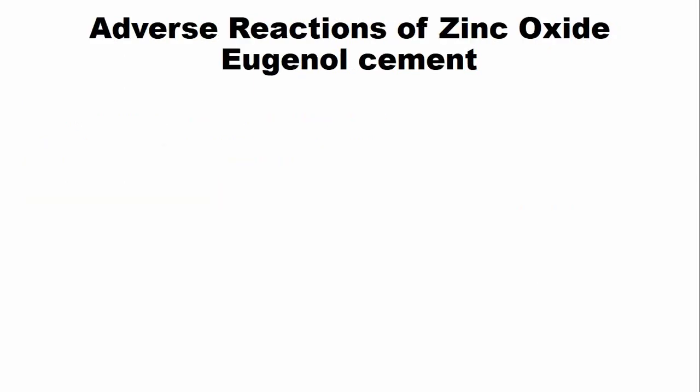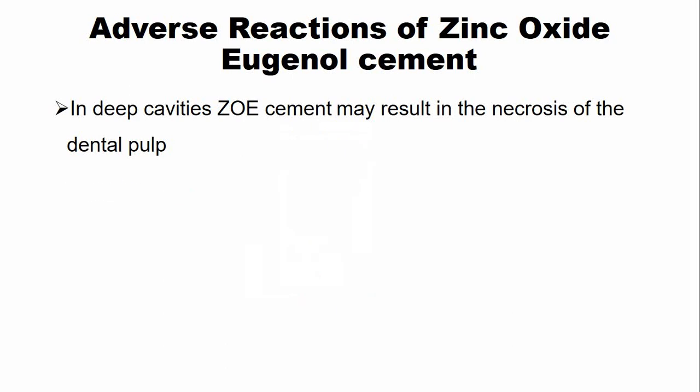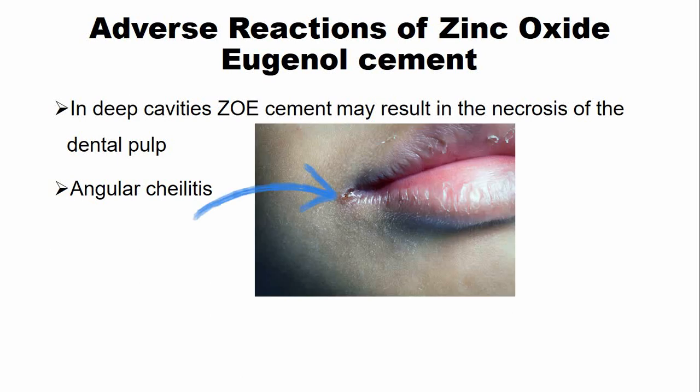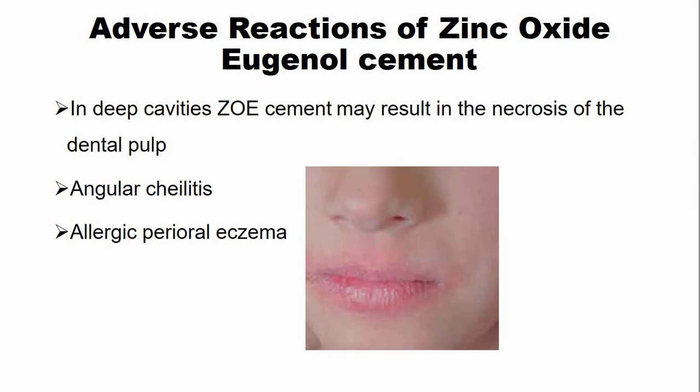The adverse reactions associated with zinc oxide eugenol cement include: if the cement is placed in deep cavities it may result in necrosis of the dental pulp. The eugenol component may cause angular cheilitis, or sometimes the cement may cause allergic perioral eczema.